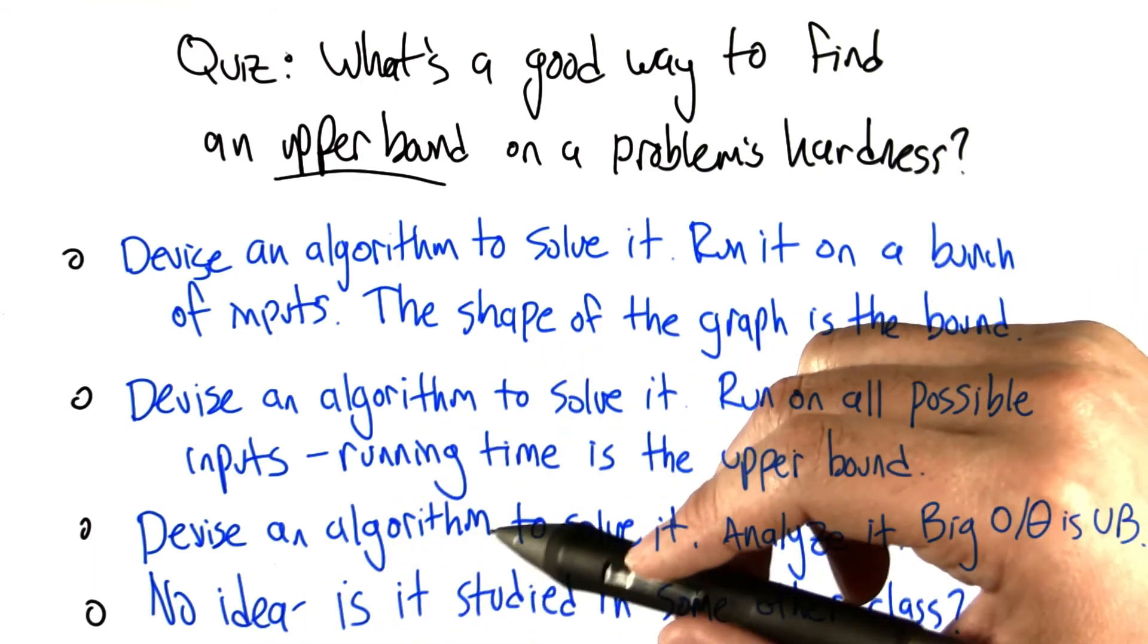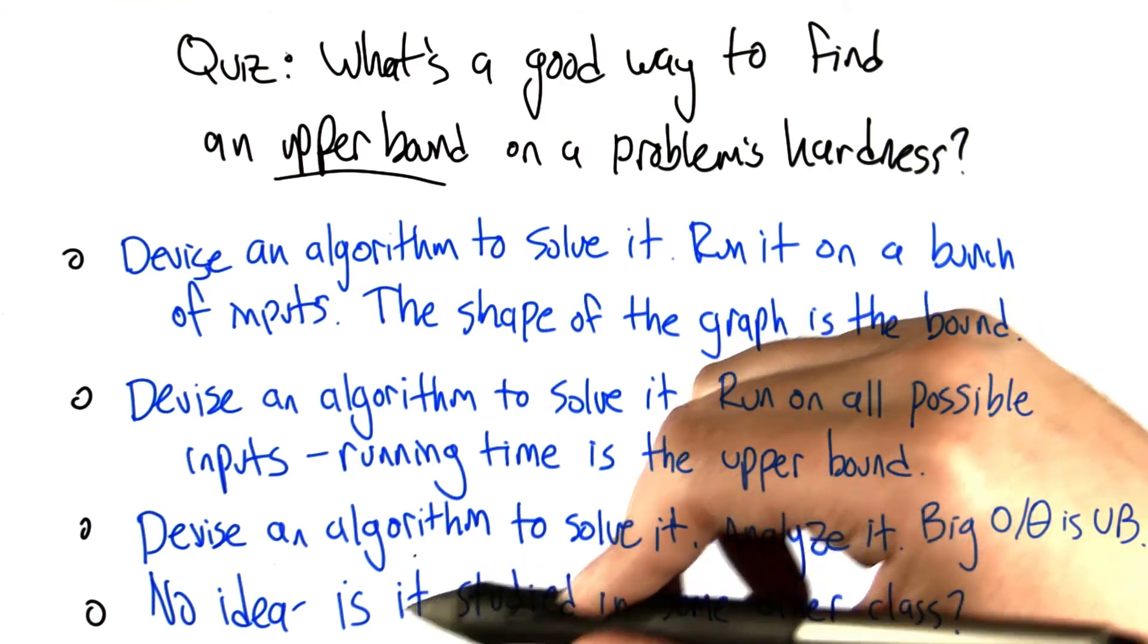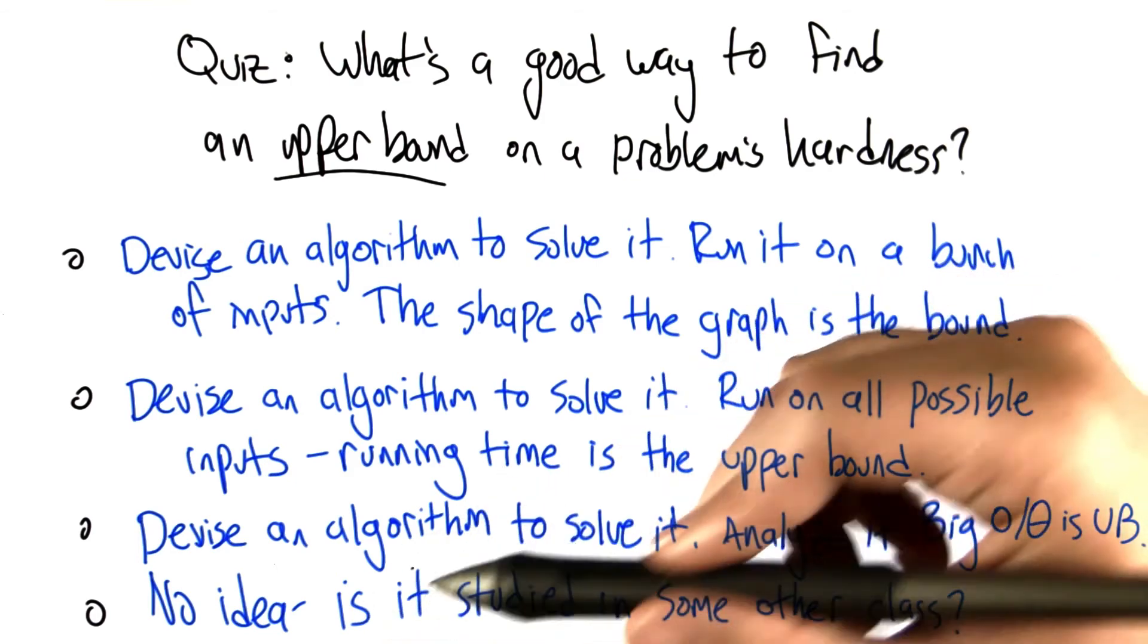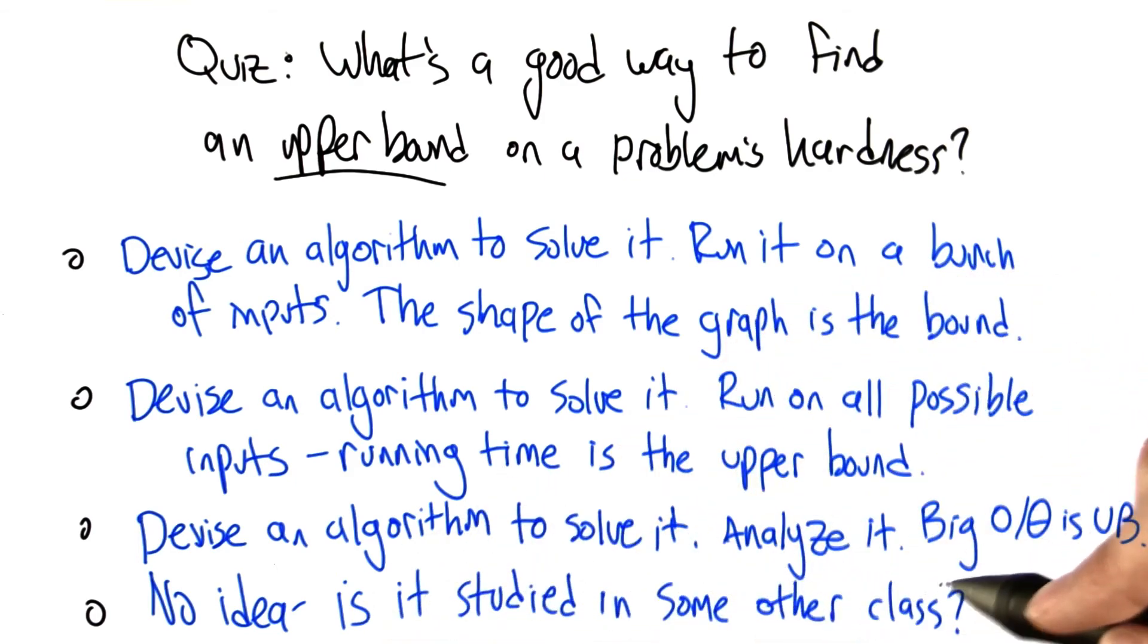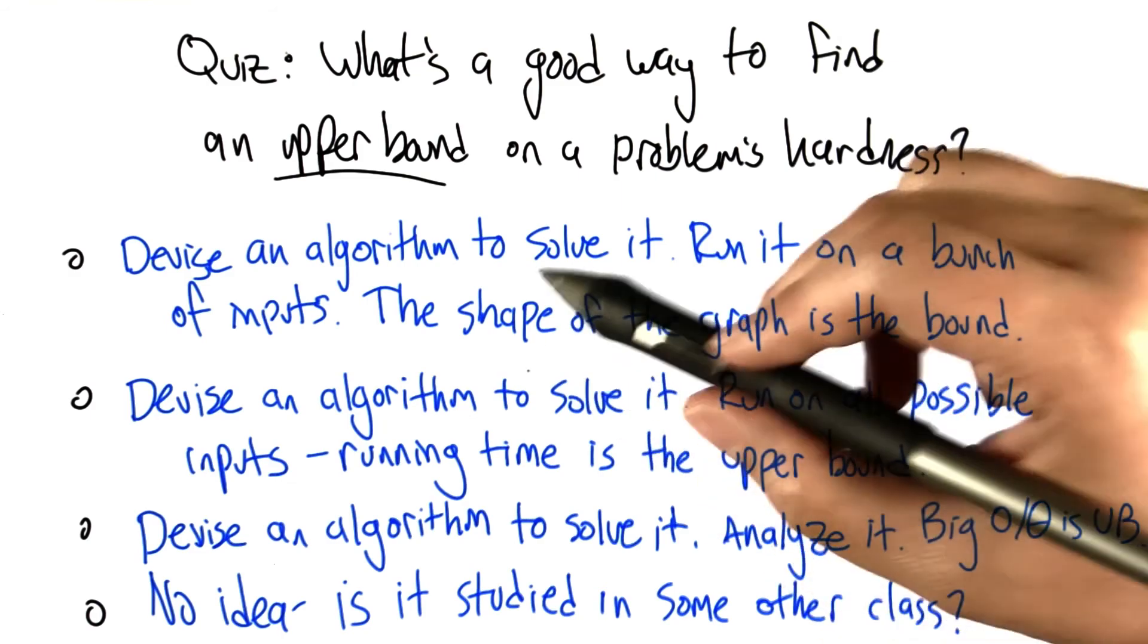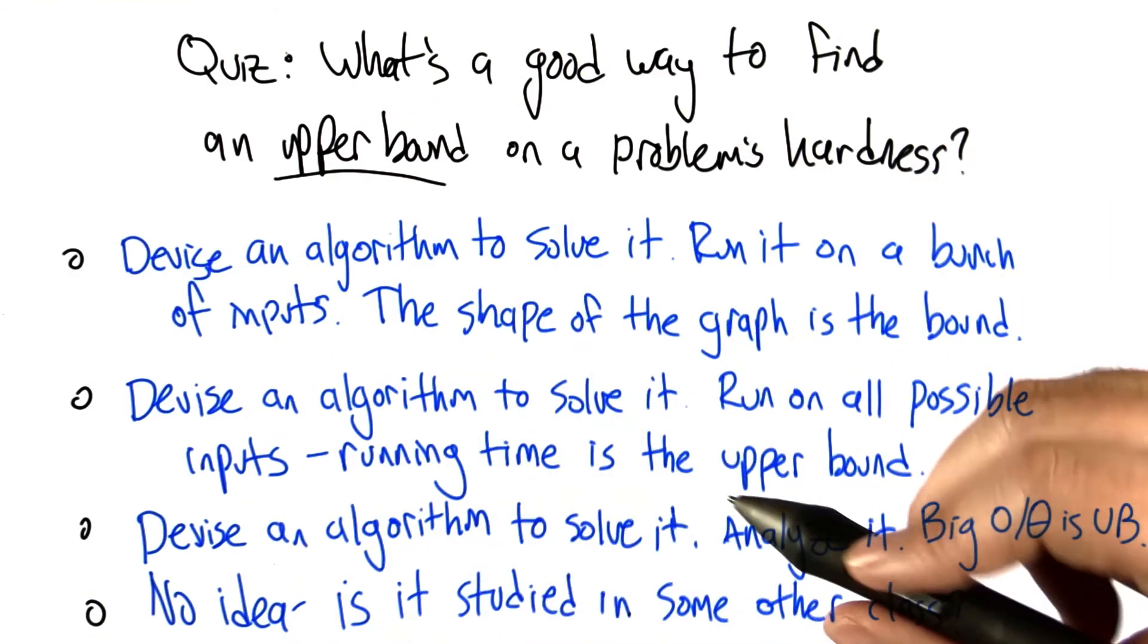And then the final choice is, this is a trick question. The whole question of upper bounds must be some other class because it's not what we've been studying in this class. So decide which one you think is most appropriate and check it off.